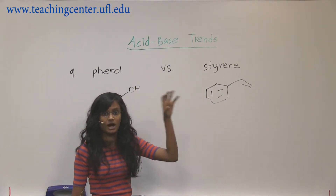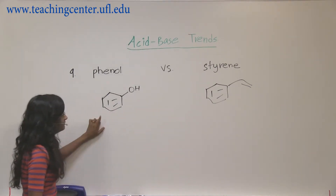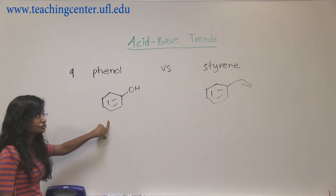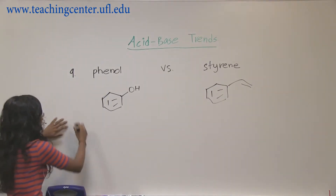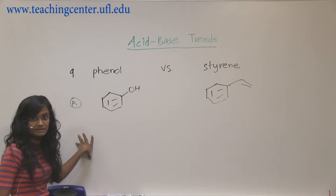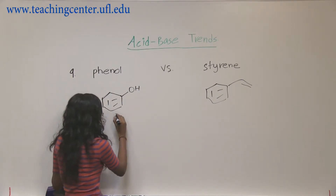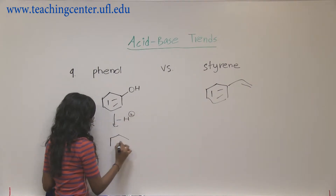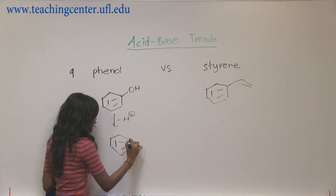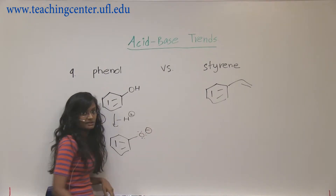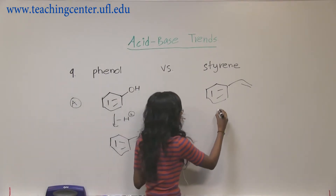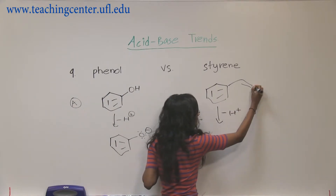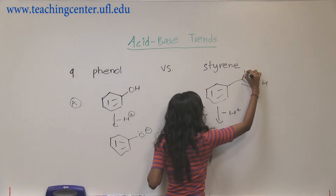Styrene's alkene is going to grab a hydrogen, but at the same time phenol likes to lose a hydrogen. We're going to treat both of them as acids — that will make for an easier comparison. So we lose a hydrogen from phenol, with oxygen getting a negative charge, and then we lose a hydrogen from styrene as well.